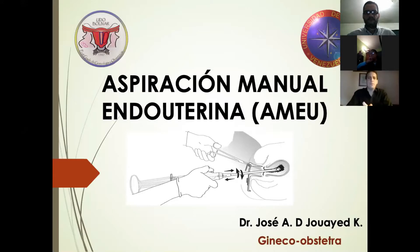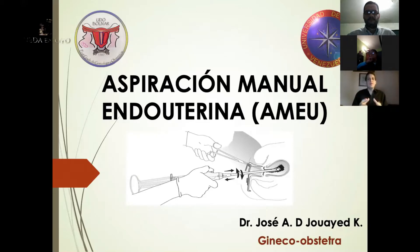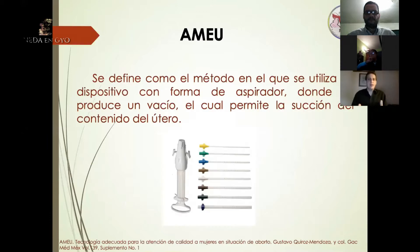El tema de hoy se denomina aspiración manual endouterina, conocido también como AMEU. Este se define como el método en el que se utiliza un dispositivo en forma de aspirador donde se produce un vacío. Este vacío se genera gracias a una presión negativa, el cual permite la succión del contenido del útero.